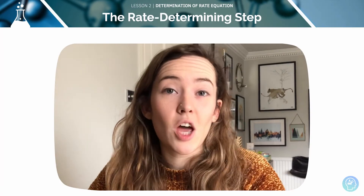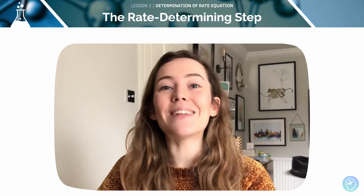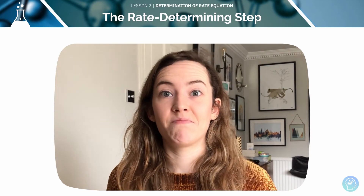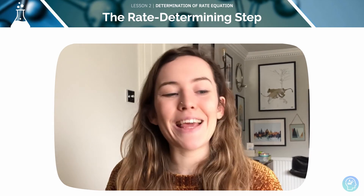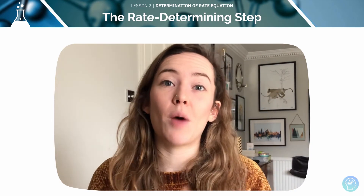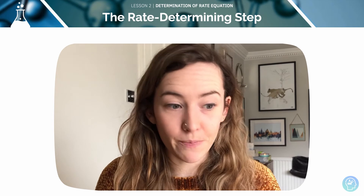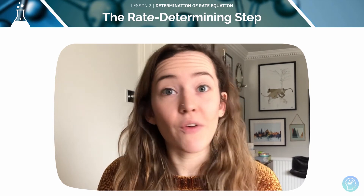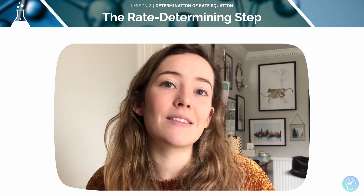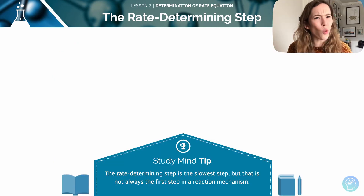The rate determining step is the slowest step of a reaction and it determines the overall rate, like a bottleneck. Any reaction involved in the step that follows the rate determining step will not be included in the rate equation. Intermediates are not part of the rate equation but sometimes catalysts are. The rate determining step is always the slowest step but it's not always the first step in a reaction.